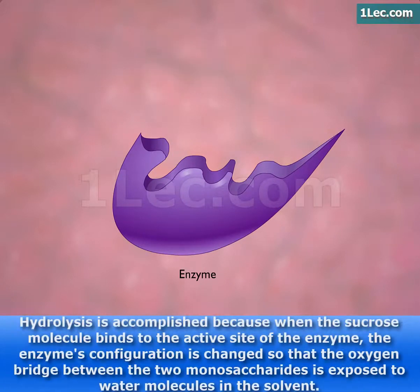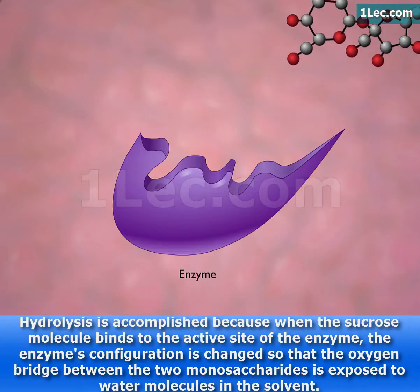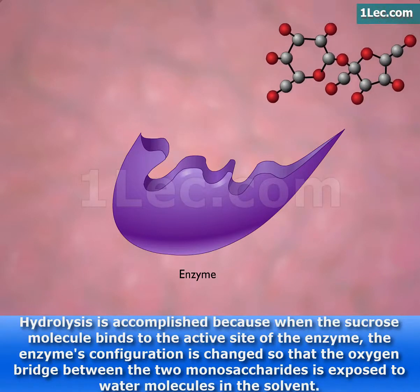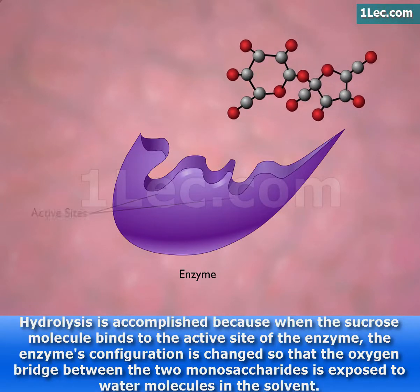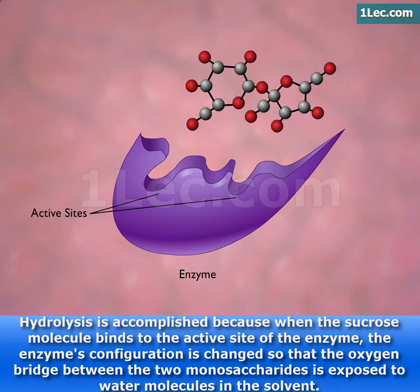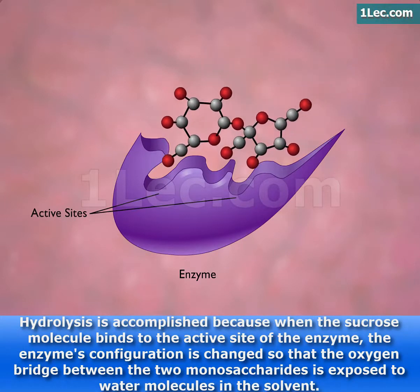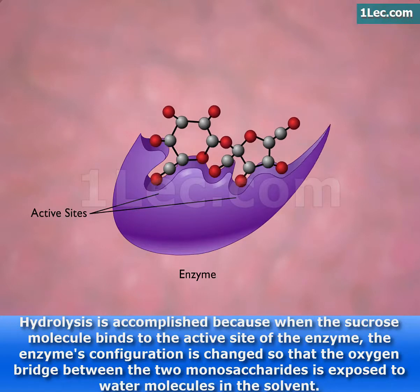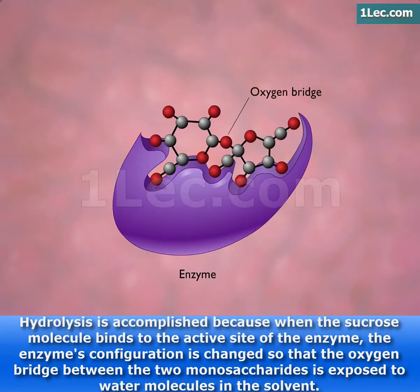Hydrolysis is accomplished because when the sucrose molecule binds to the active site of the enzyme, the enzyme's configuration is changed so that the oxygen bridge between the two monosaccharides is exposed to water molecules in the solvent.